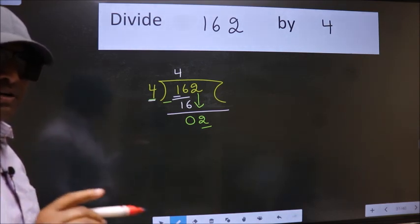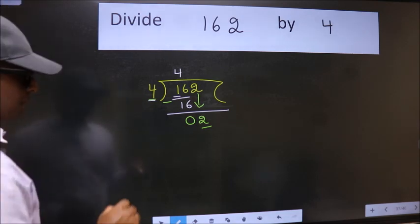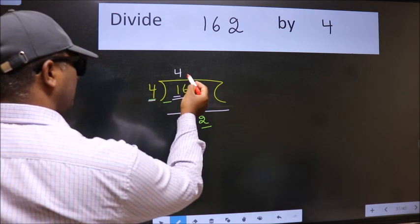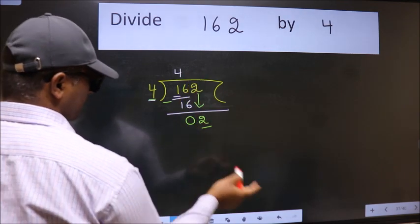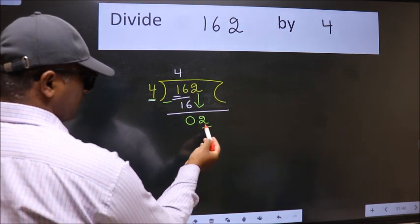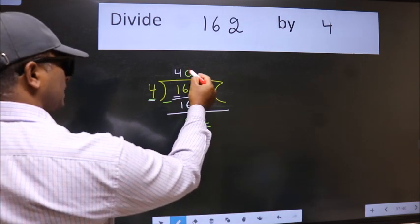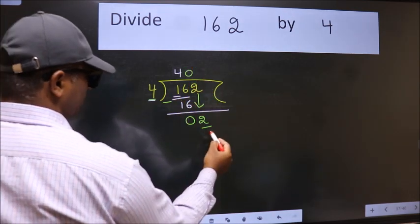Instead of that, what we should think of doing is which number should we take here. If I take 1, we will get 4. But 4 is larger than 2. So what we do is we take 0. So 4 into 0, 0.